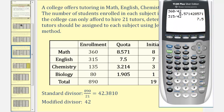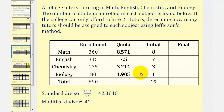Notice that if we cut off the decimal parts of the quota, we have 8, 7, 3, and 1 — but the total is still 19, not 21. So we need to reduce the divisor again.